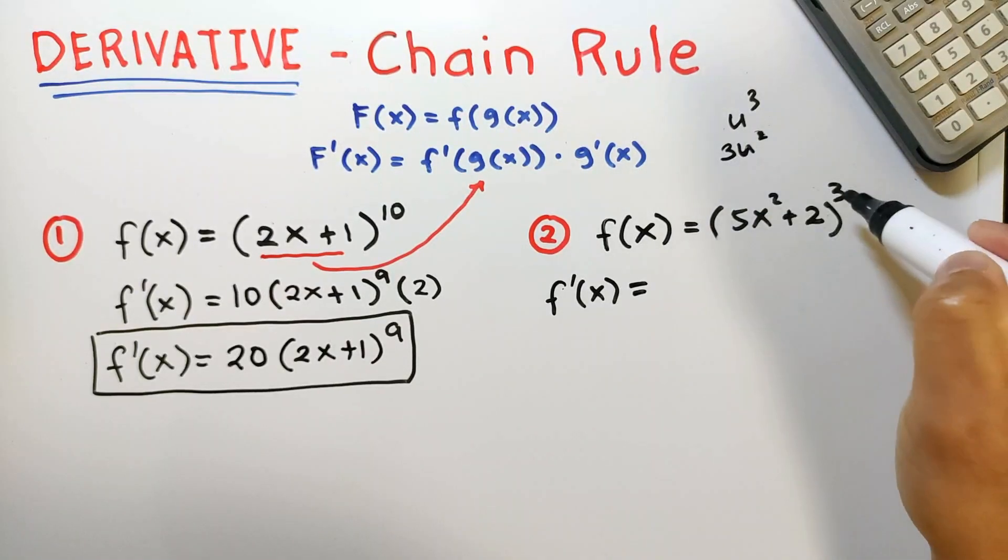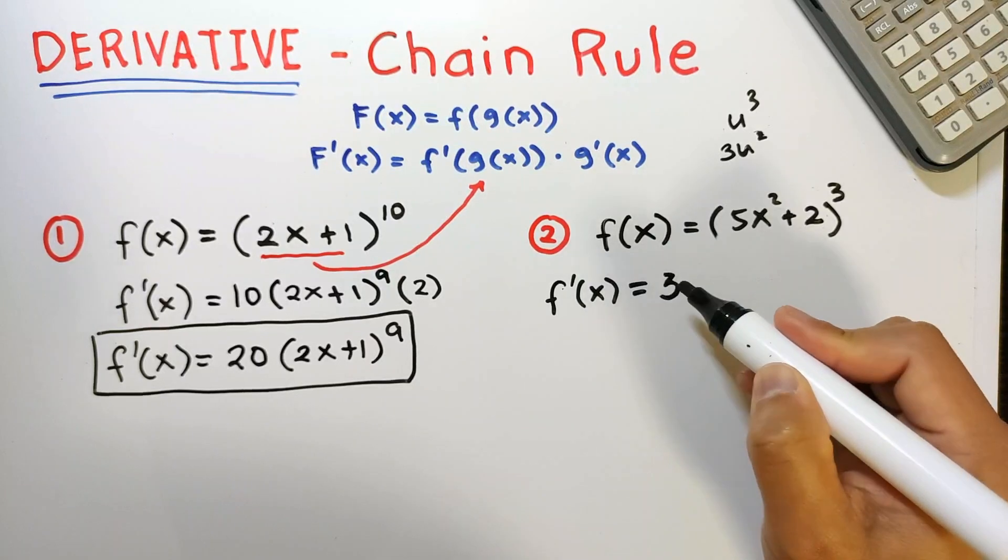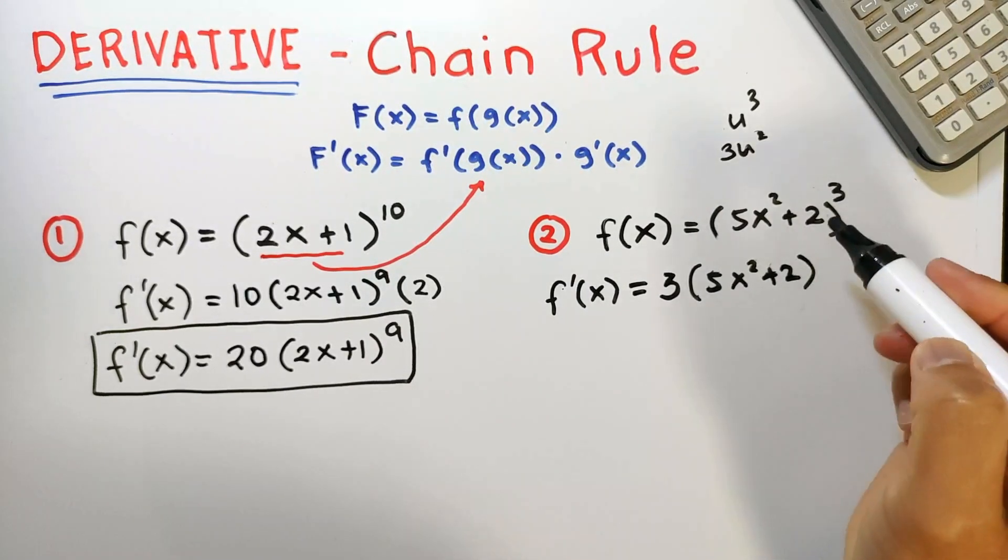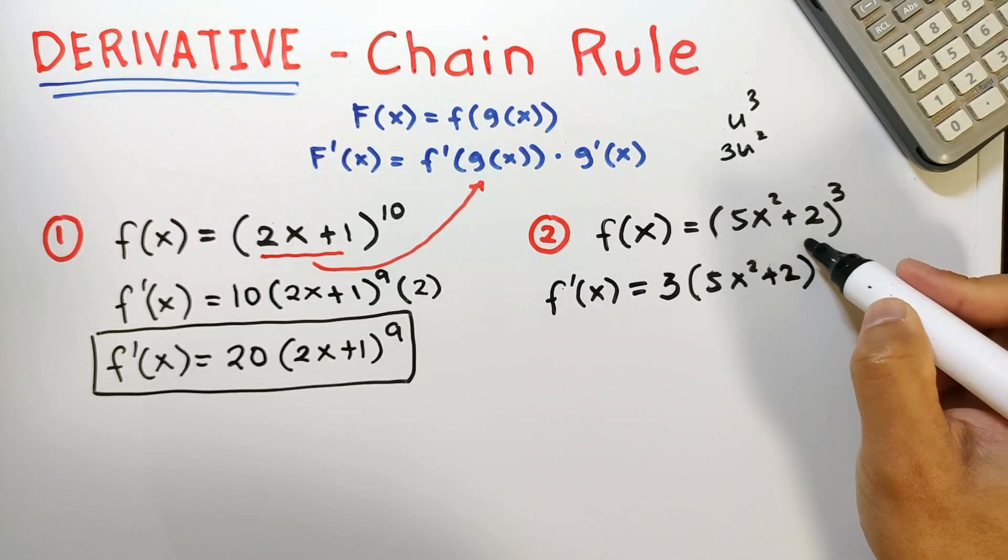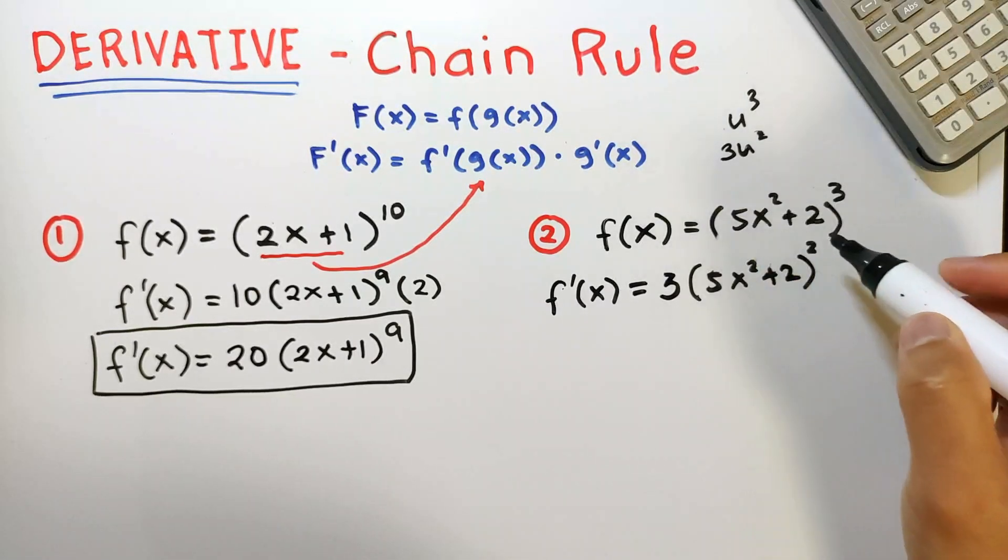Then follow the form. So that's bring down 3 as a coefficient, copy the base, and then 3 minus 1 is 2. And then multiply it by the derivative of the inner function.